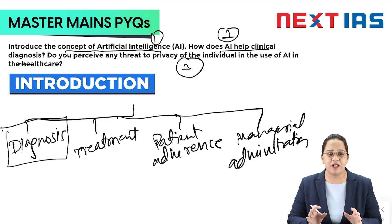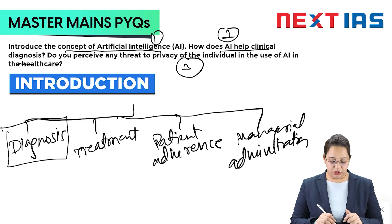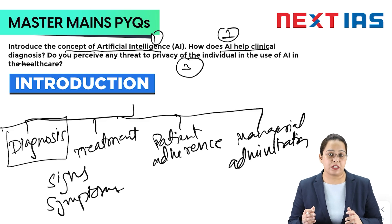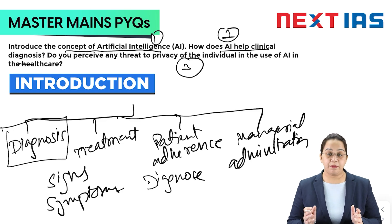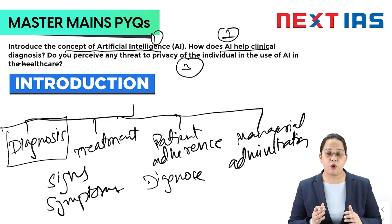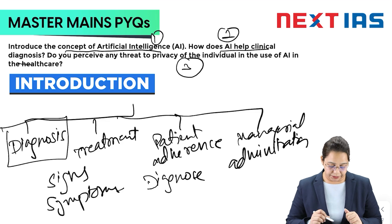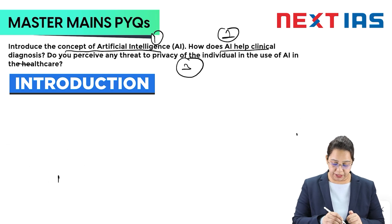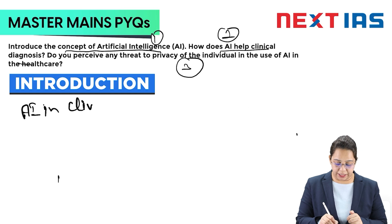In simpler terms, clinical diagnosis is when a patient goes to a doctor and the doctor, based on signs, symptoms, and some tests, diagnoses the disease. Based on this diagnosis, treatment is planned — only when the disease is diagnosed properly can proper treatment be done. The heading for this section can be: 'AI in Clinical Diagnosis.'